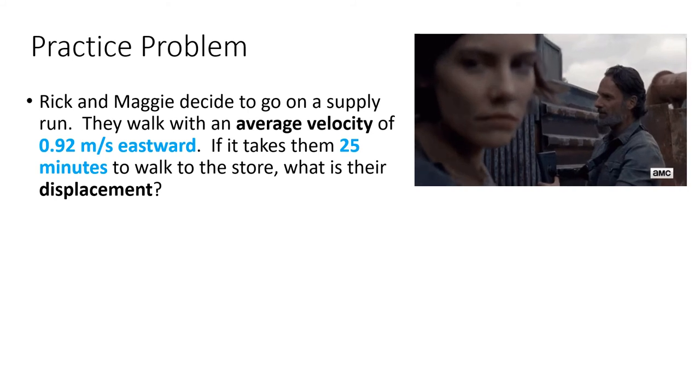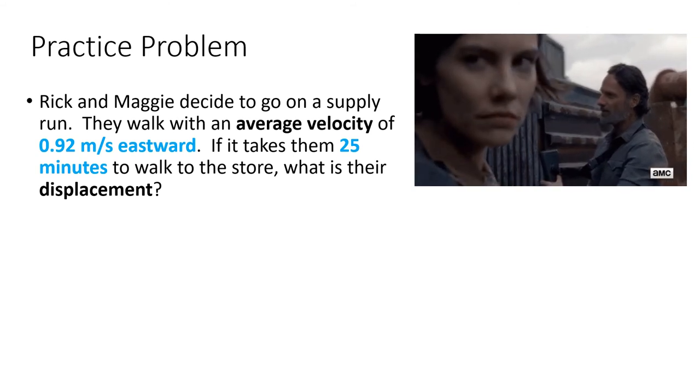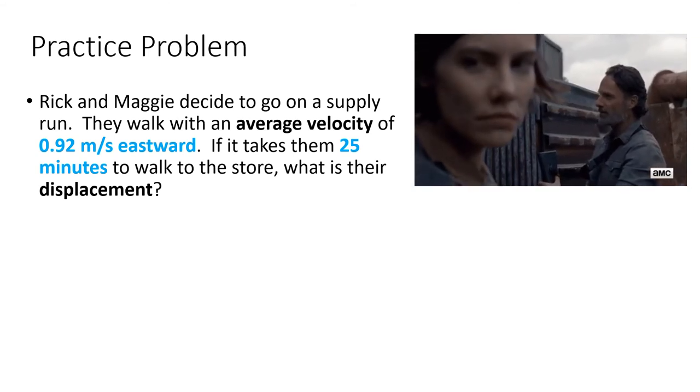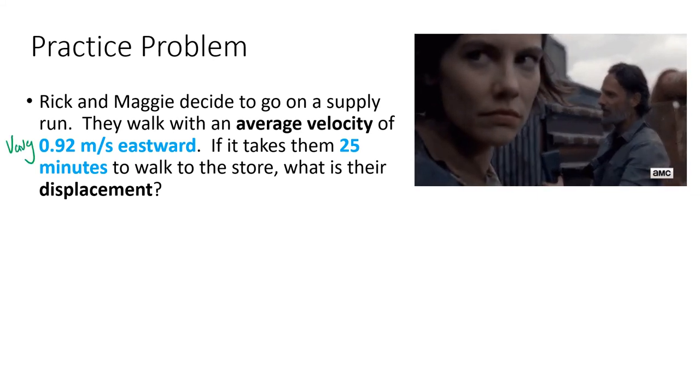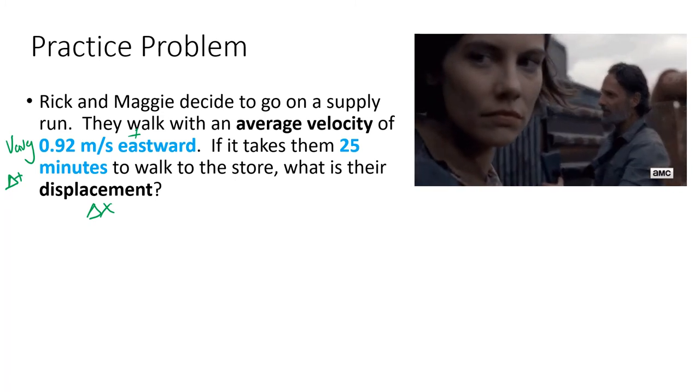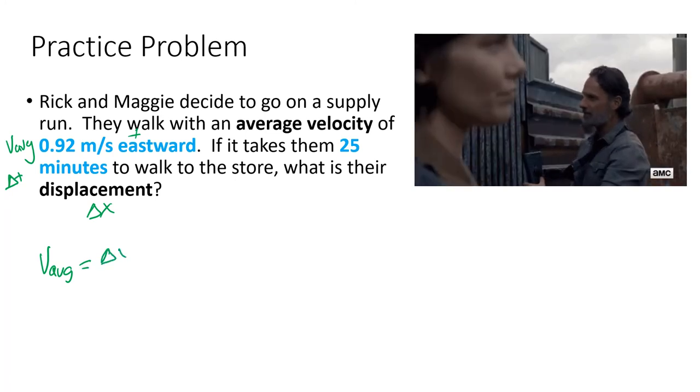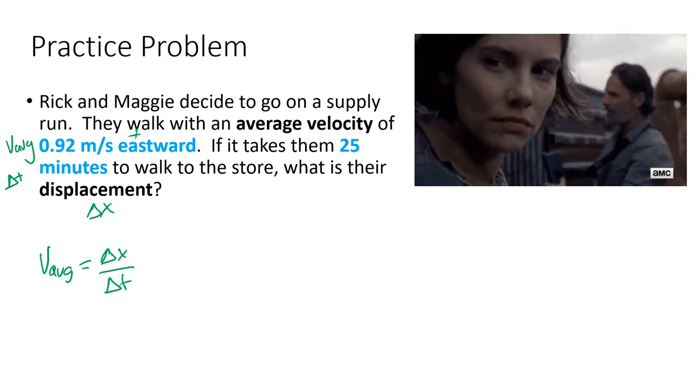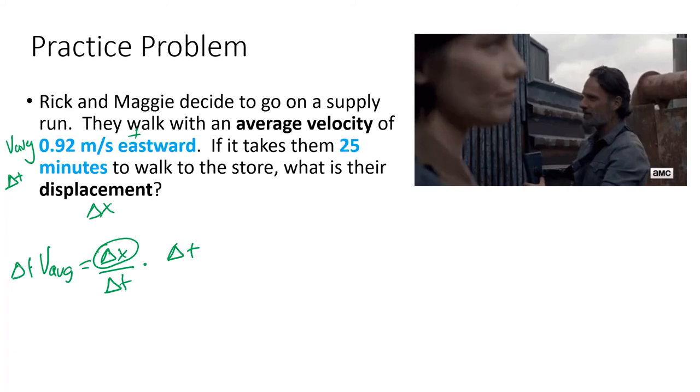Walking Dead fans, Rick and Maggie decide to go on a supply run. They walk with an average velocity of 0.92 meters per second eastward. If it takes them 25 minutes to walk to the store, what is our displacement? I'm identifying right now. Eastward, so it's positive. It takes them 25 minutes, that's my time. Displacement is delta x. So average velocity equals delta x over delta t. I am trying to find this. So multiply both sides by delta t. These cancel out.